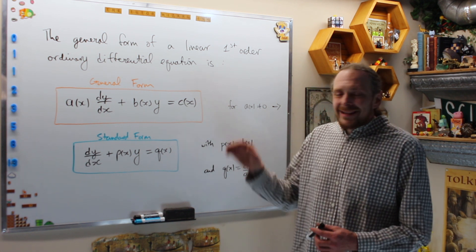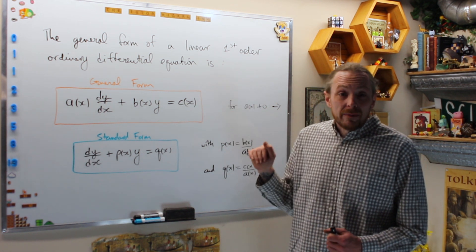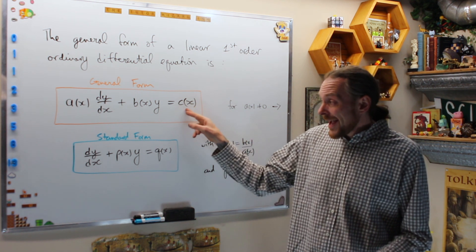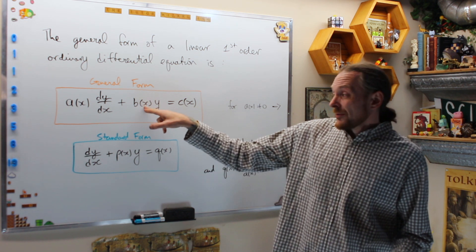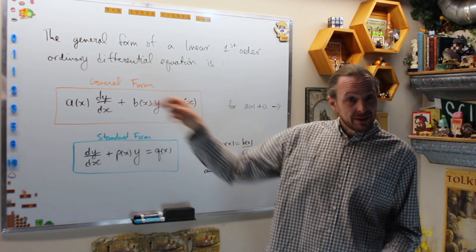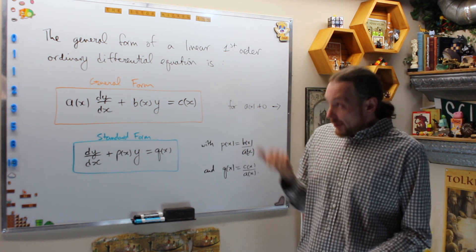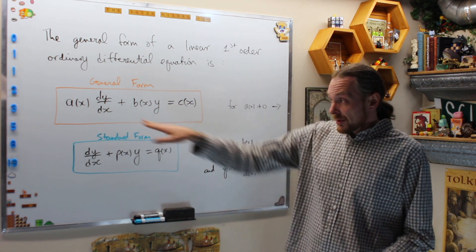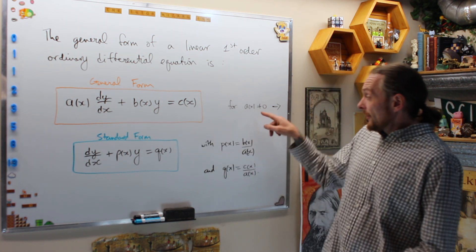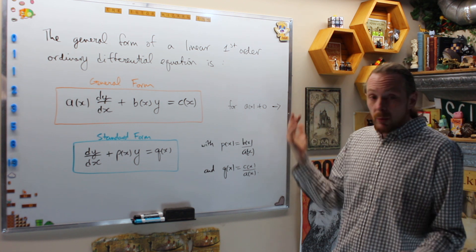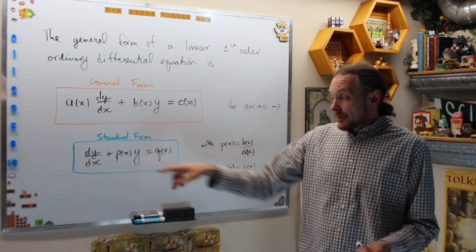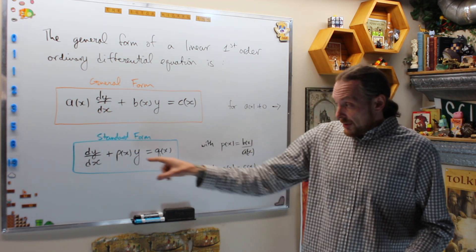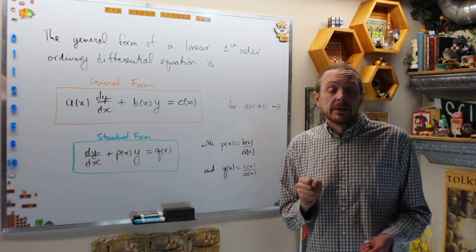Remember from the previous video, in general, regardless of the order of the differential equation, it's linear if every term is a constant function of our independent variable x, or a function of x times exactly one of y or the derivatives. Therefore, for a first order differential equation, the general form of a linear equation looks like this. If a of x is not 0, we want to immediately put it in standard form, so we divide by a of x and get the standard form of the differential equation.